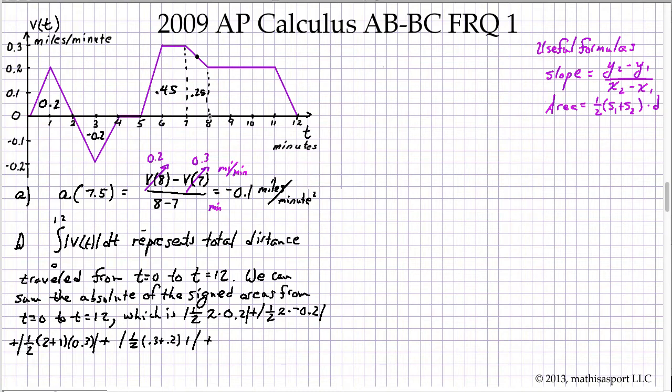The absolute value of one-half times 0.3 plus 0.2 times 1 is going to be 0.25. Finally, the absolute value of this last area—these are the two parallel sides, one a length of 4, the other a length of 3—so I have the absolute value of one-half times 4 plus 3, and the distance between those two parallel sides is 0.2, which gives a signed area of 0.7. We add up each of those absolute values and we get 1.8. As to the units, we're multiplying miles per minute times minutes, so these minutes cancel out and it's 1.8 miles.